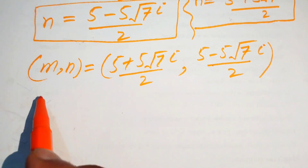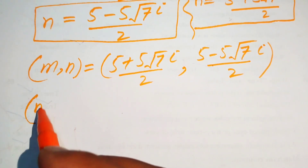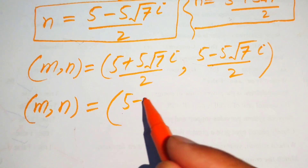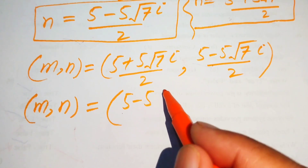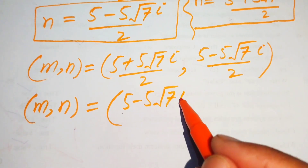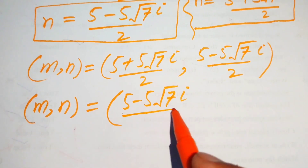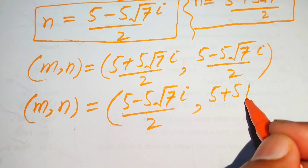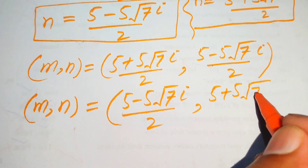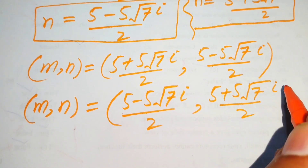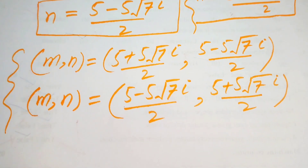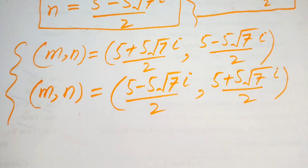The second solution is: m equals (5 minus 5√7·i) divided by 2, and the corresponding n equals (5 plus 5√7·i) divided by 2. These are the two final solutions of the given system of equations.